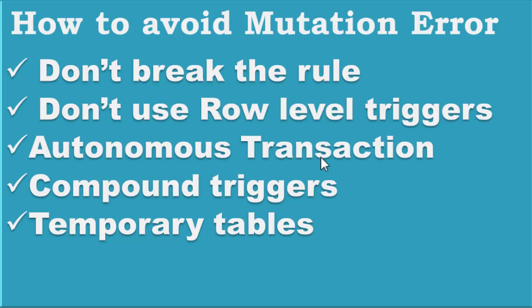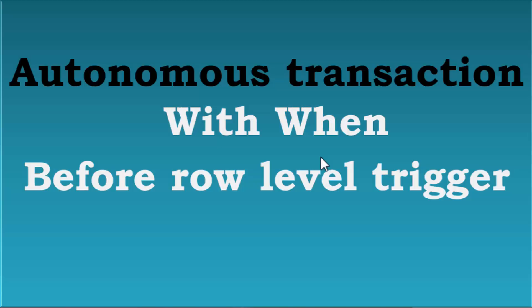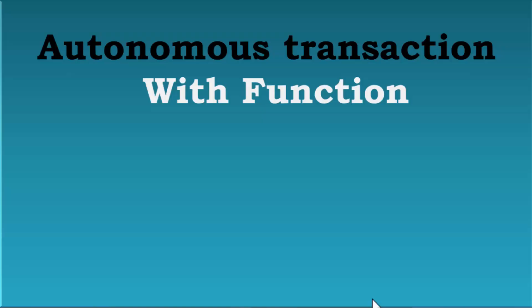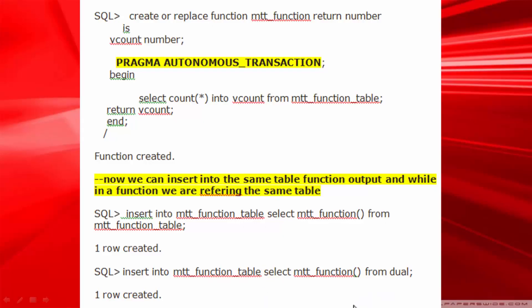Using autonomous transaction to avoid mutation error: we use the keyword PRAGMA AUTONOMOUS_TRANSACTION inside the trigger. With autonomous transaction, we can successfully insert single rows, multi-rows with sub-query, update the table, and perform delete operations on the same table. This is a very unique feature for avoiding mutation error.